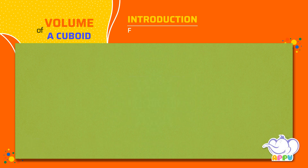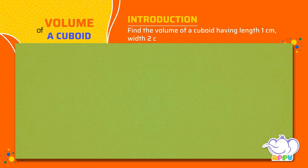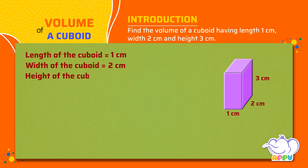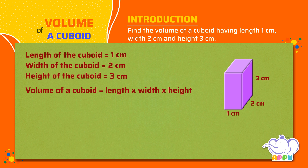This is a cuboid having length 1 cm, width 2 cm, and height 3 cm. Let's find its volume. Length of the cuboid equals 1 cm. Width of the cuboid equals 2 cm. Height of the cuboid equals 3 cm. So the volume of the cuboid equals length times width times height: 1 cm times 2 cm times 3 cm equals 6 cm³.